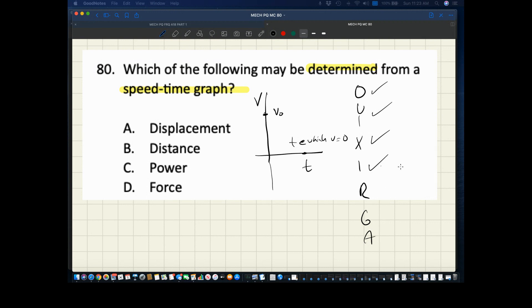What can we read from this graph? The axes, which are v and t. The slope, which is delta v over delta t, which is the acceleration. And the area, delta v times delta t, meters per second times seconds is meters. So that is the displacement delta x.